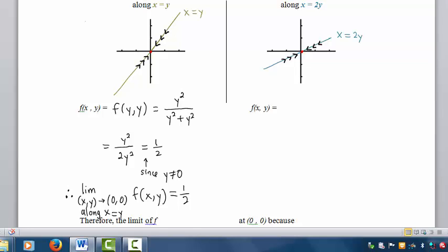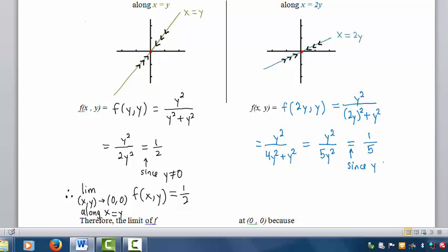If we look along the line x equals 2y, f(x, y) equals f(2y, y). So everywhere along this line x equals 2y, the function has value 1 fifth, again except at the origin. So therefore, the limit is also 1 fifth.